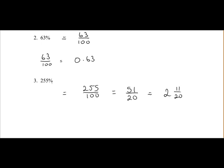To convert it to a decimal, we simply divide by 100. So 255 divided by 100 is equal to 2.55. So that's what it is as a decimal.